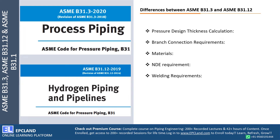Let us try to understand five major differences between B31.3 and B31.12. B31.3 is the process piping code whereas B31.12 is the hydrogen piping and pipeline code. These two codes set the basic guidelines across the whole process industry. The five parameters we'll compare are: pressure design thickness calculations, branch connections, materials requirements, and welding requirements.